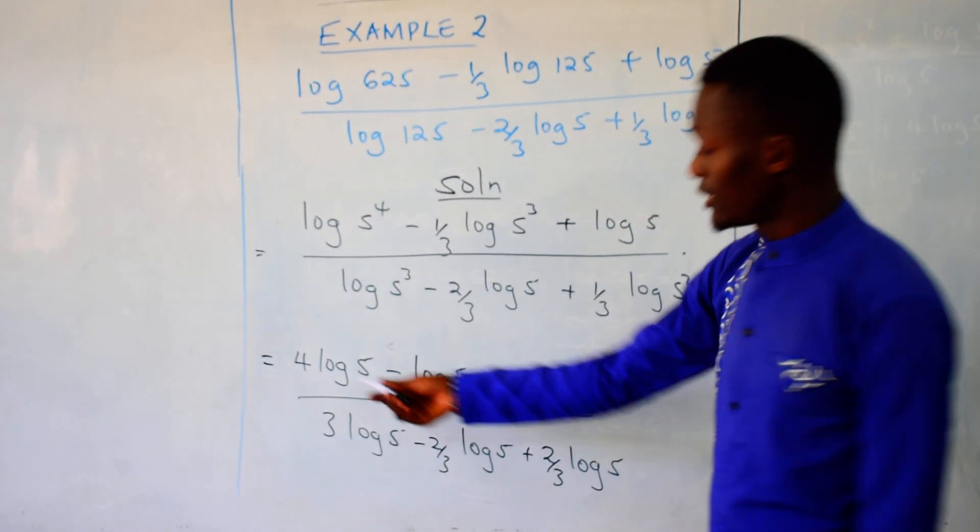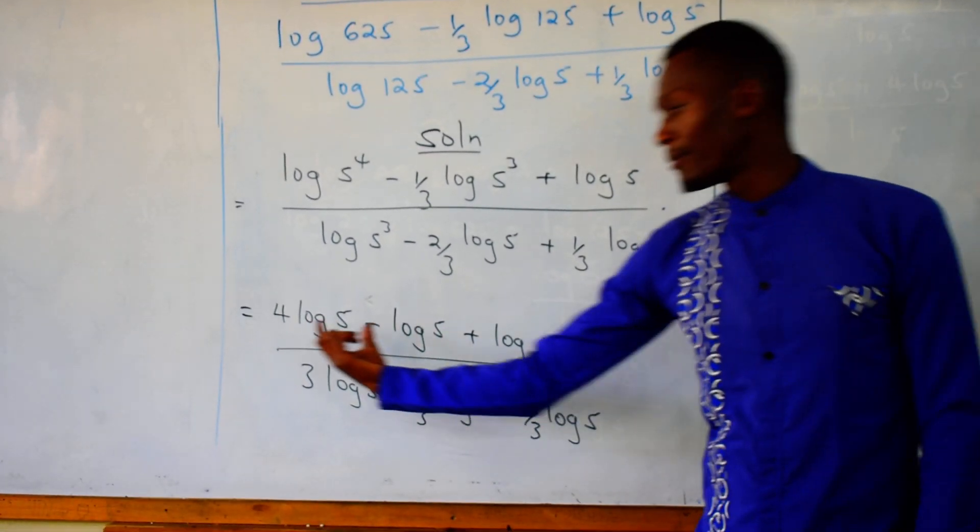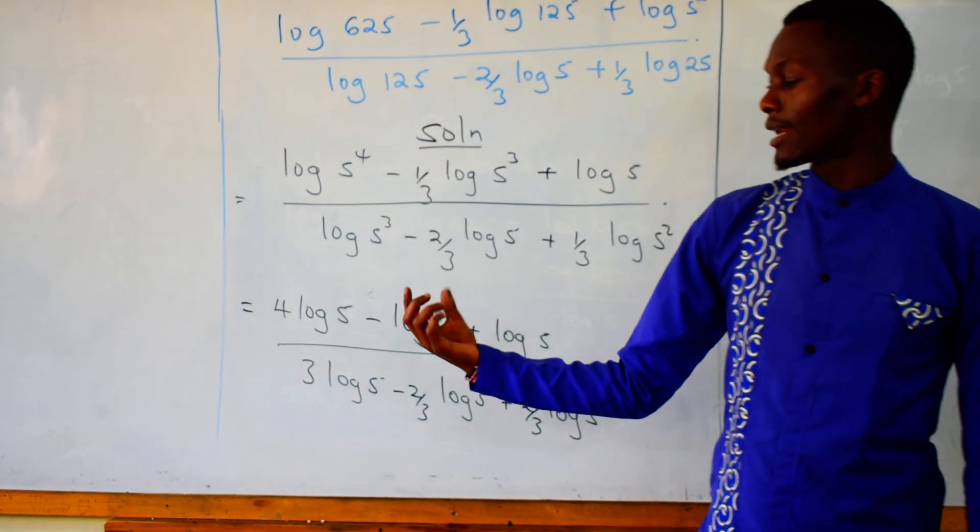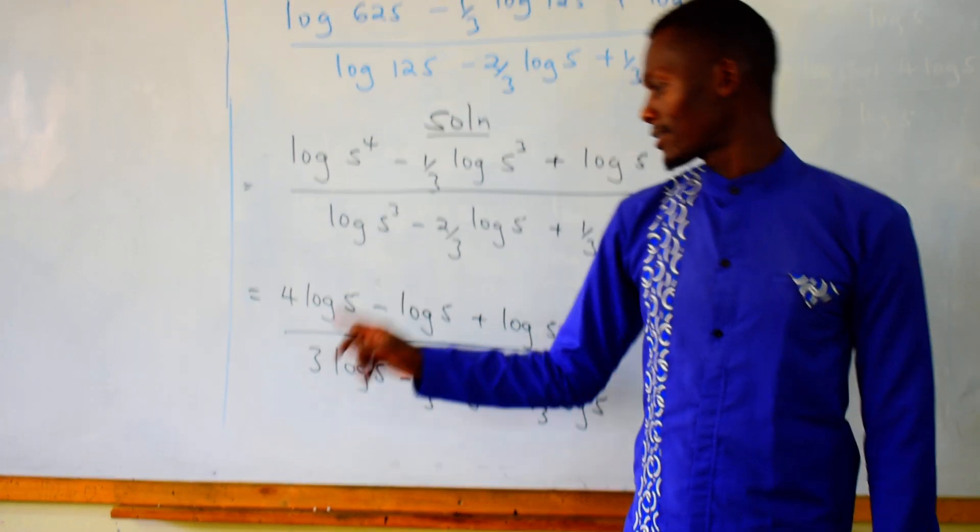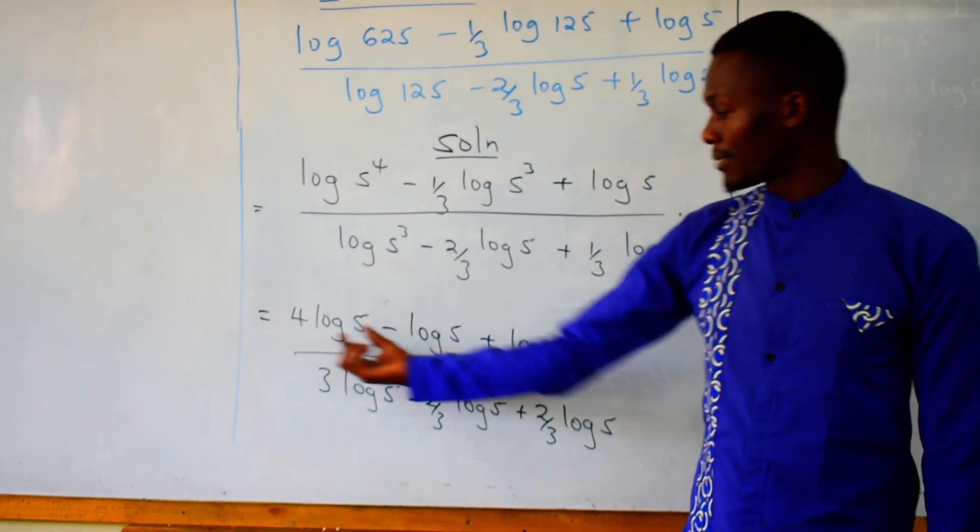Now, you can always take this as a term. You can assume it's like a term, like 4x minus x plus x. Take this as a term, because it is one and the same thing.